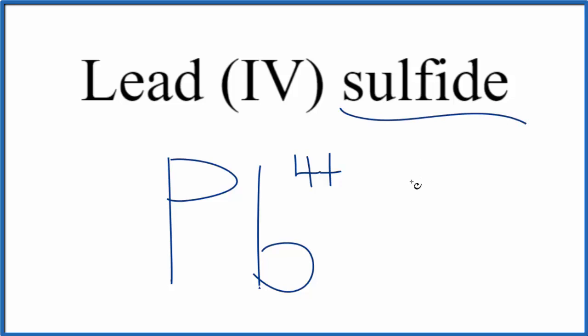Sulfide, on the periodic table, that's from sulfur, so we put S. And sulfur is in group 16, sometimes called 6A, it's 2-.